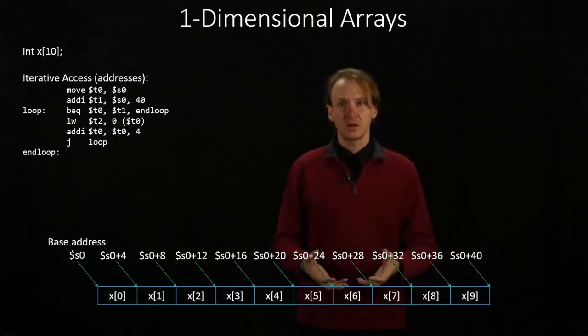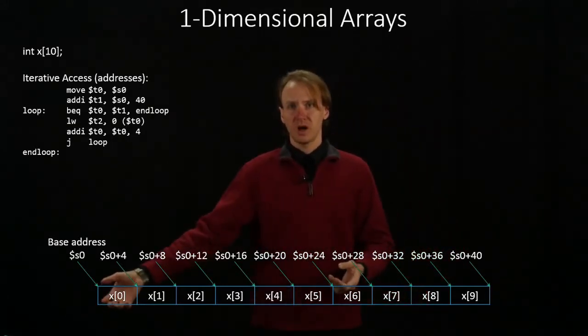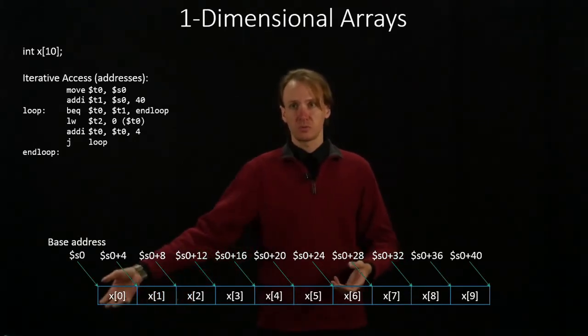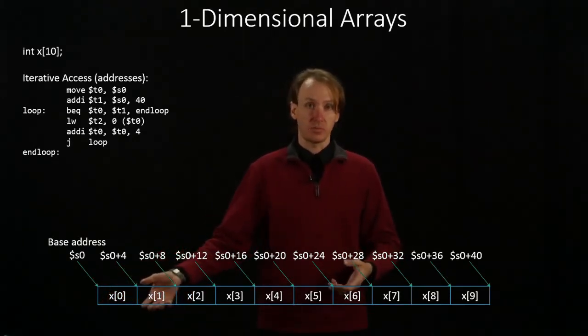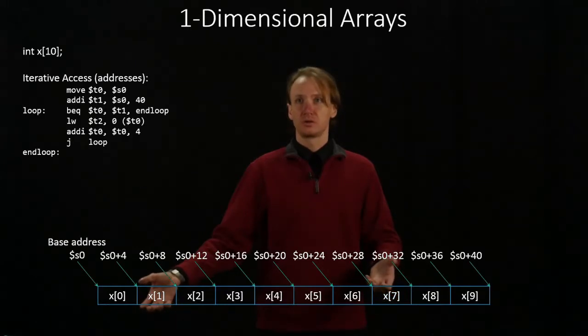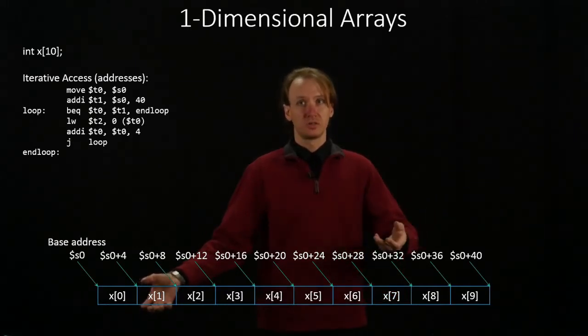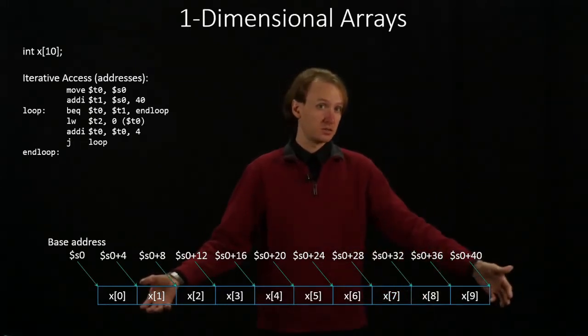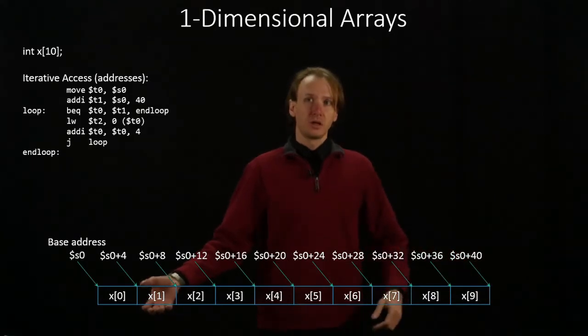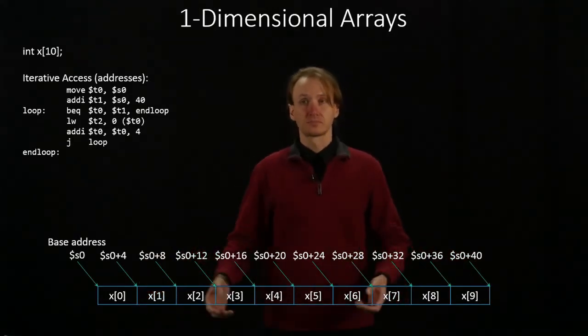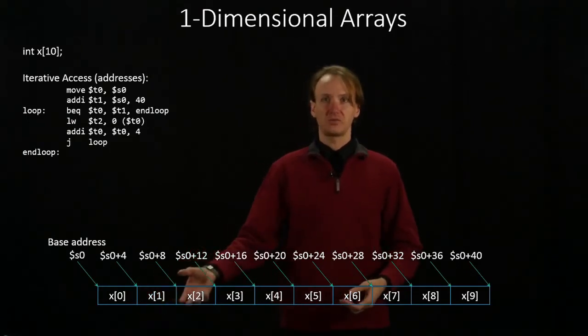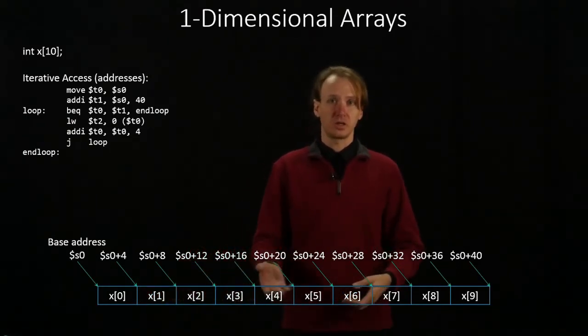To get to the next element, I'm just going to increment my address by 4. Before I was pointing at s0, now I'm pointing at s0 plus 4. So the second time through the loop, t0 would still be less than t1 over here, and it would pull out the value of x1. Then it would increment the address again, we'd get x2, x3, and so on.